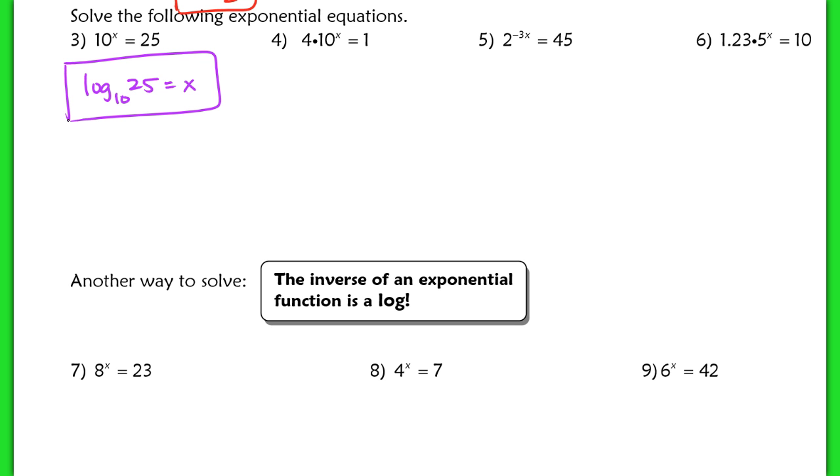In number 4, before you want to start rewriting it in log form, let's get the 4 to the other side. You still want to isolate x as much as possible. So I have 10^x equals 1/4. In this case, 1/4 could be written as a base of 2, but 10 cannot. So I have to use a log here.